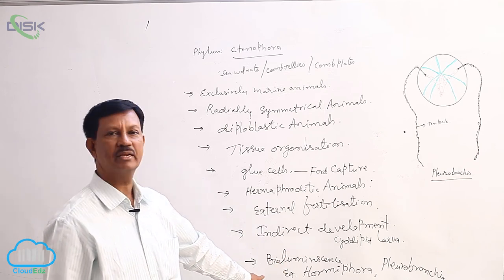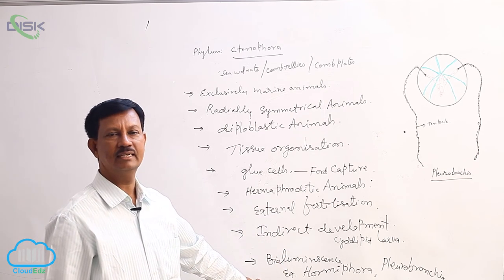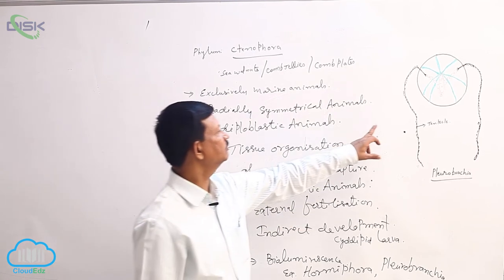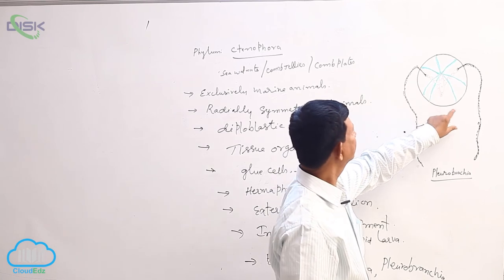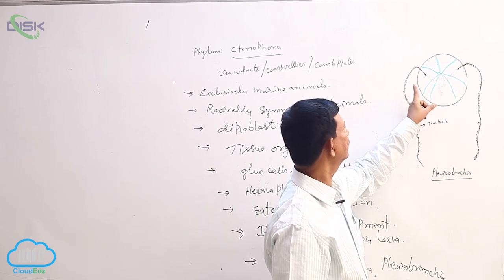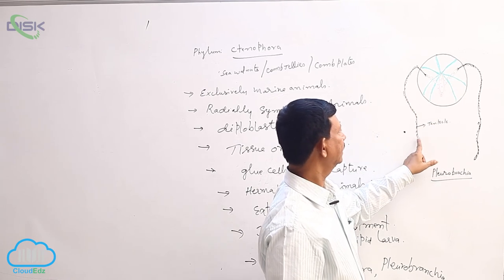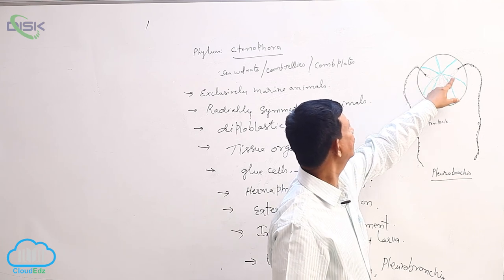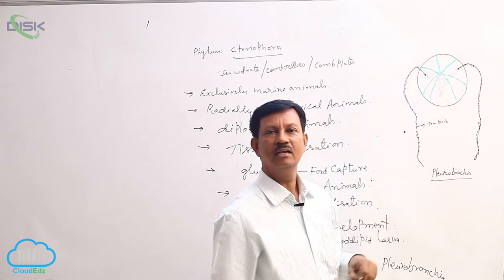Examples are Pleurobrachia and Hormiphora. You can see here is the diagram of Pleurobrachia with tentacles - long tentacles are present here. They have small hairs which help in locomotion. These are known as comb plates which also help in locomotion.